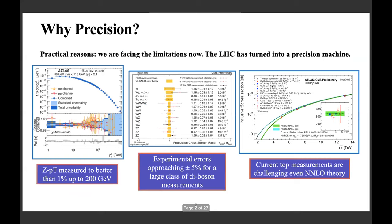Why are we talking about precise predictions? The reason is that data collected by the LHC has been improving in precision very quickly. This is just a selection of measurements done by the LHC showing the level of precision achieved. The Z pT spectrum was mentioned by Gavin already this morning — the precision is better than one percent, one of our cleanest measurements. There is a large class of diboson measurements that have achieved roughly five percent experimental precision, and at least one measurement from ATLAS already has better precision than NNLO theory.